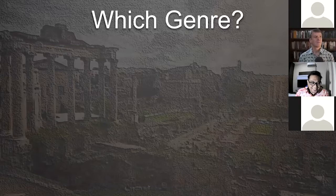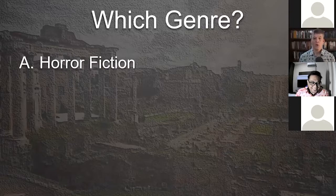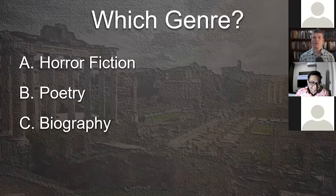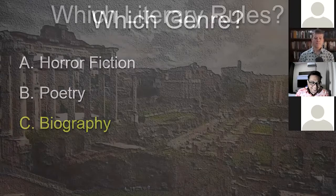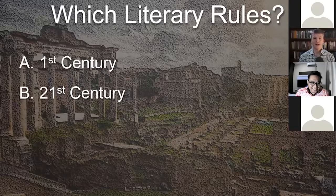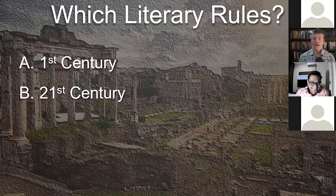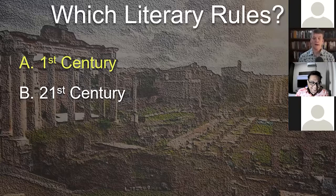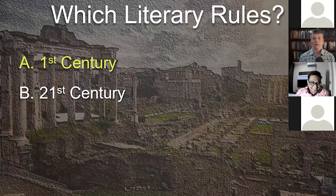If you wanted to write a book about an important person, what genre would you use? You'd use biography, of course. And if you were a biographer in the first century, writing for readers living in the first century about a person who had lived in the first century, would you use the rules for writing biography that were in play in the first century, or those that would not come into play until more than 1,500 years later? The answer is obvious: you would write it according to the rules that were in play in the first century.